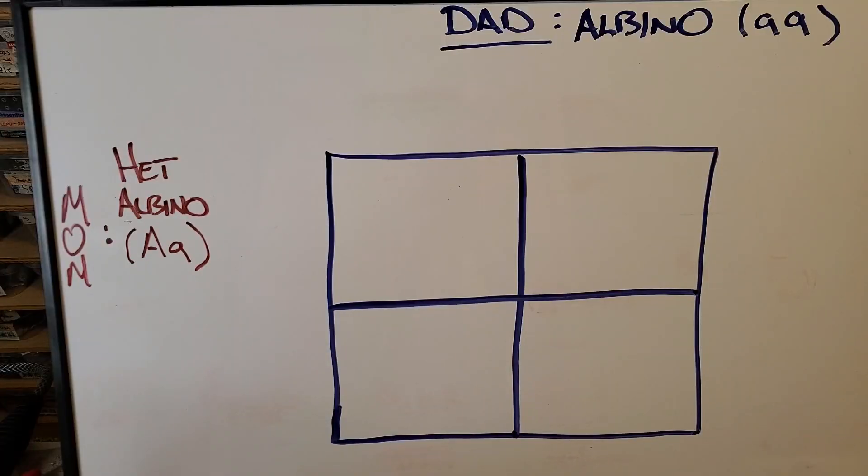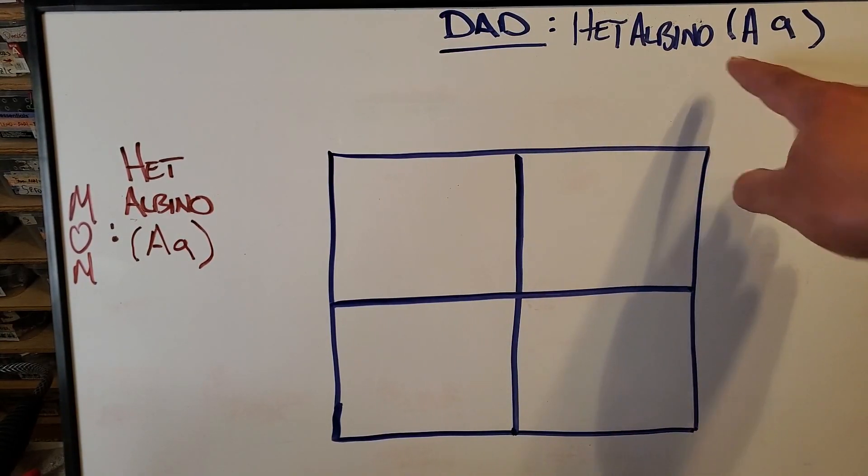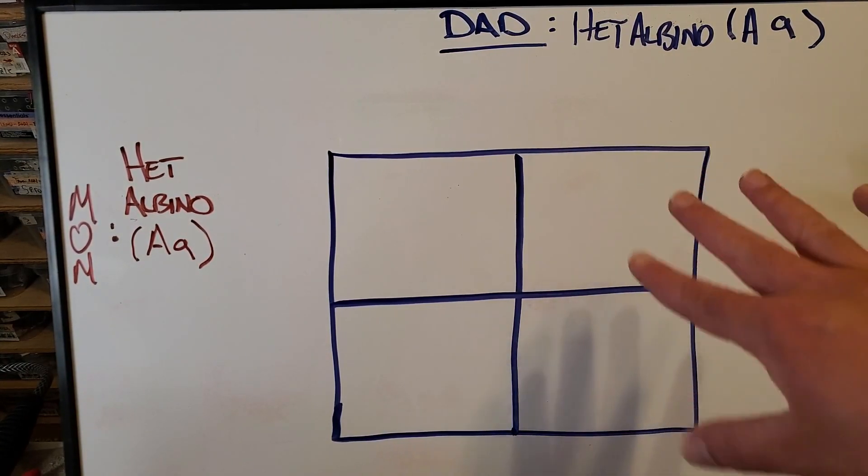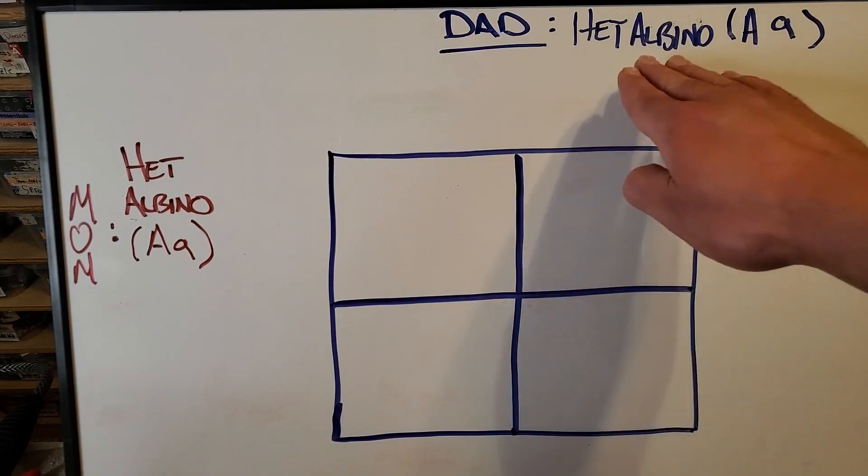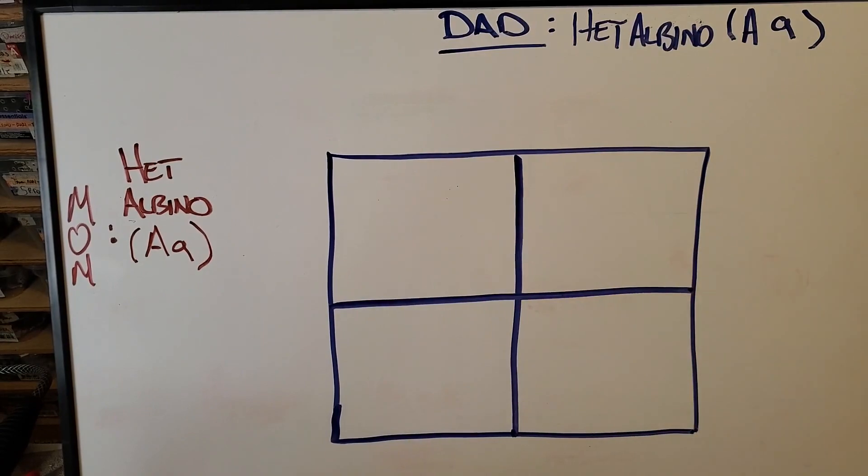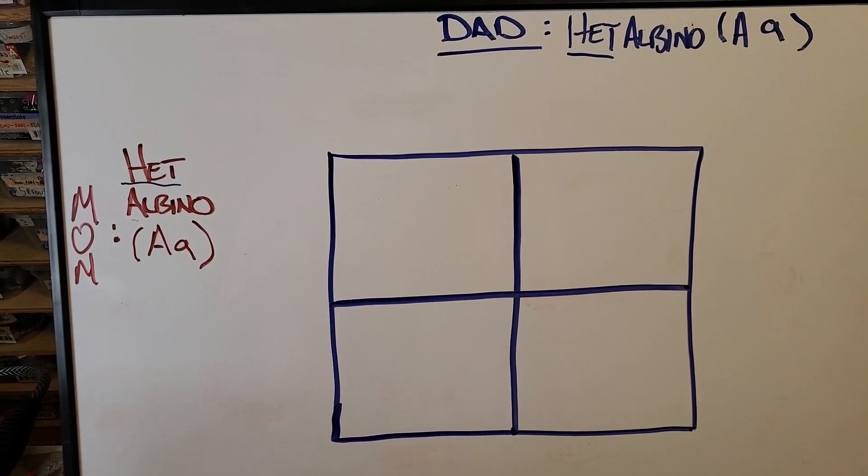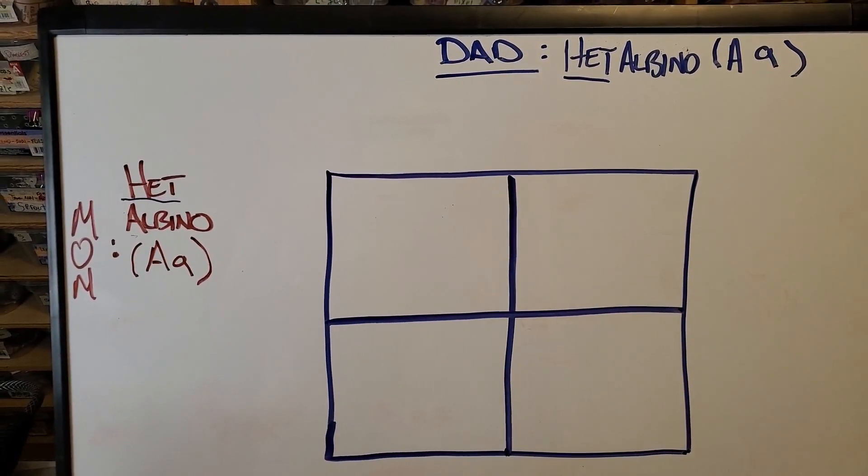Okay guys, here we have our Punnett square board, and this is going to teach us exactly how we calculate 66%. I had to fix this really quick because I had written up here albino, a visual albino, but you can't actually get 66% from a visual to anything. It has to be a het to het. So notice those keywords here: het and het. So just remember to get 66%, it has to be a het to het pairing.